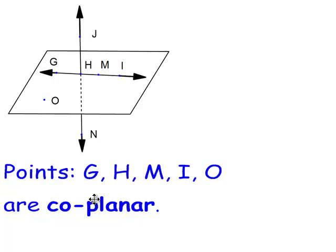So, points on this picture, J, H, M, and I are all collinear. And then O is not collinear. So, G, H, M, I, and O, those are all coplanar points. They all lie on the same plane.